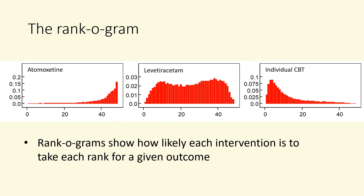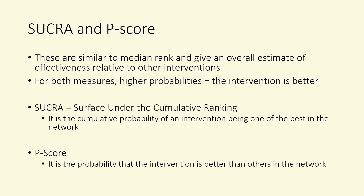Remember that ranks and relative effects need to be considered together. SUCRA and P-Score metrics are calculated through different approaches but are equivalent and similar to the median rank. Both are a cumulative measure of the probability that the intervention is better than others in the network. Interventions that are ranked more highly will have higher SUCRA and P-Score values.